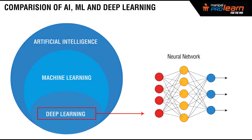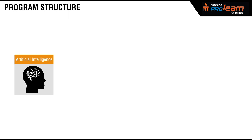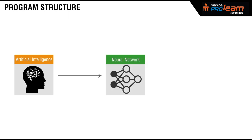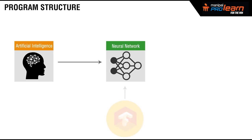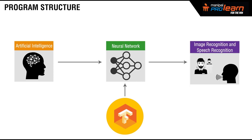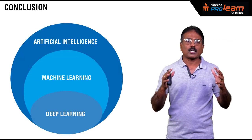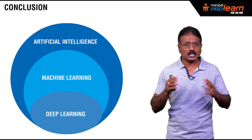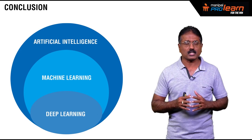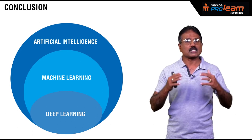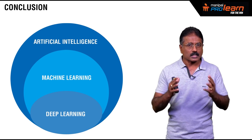Our program is structured in a similar way. We have an introduction to AI, then we will talk about what neural networks are, and then how to implement neural networks using programs and libraries like TensorFlow. Then we will go into image recognition and speech recognition, which are two of the most popular components of AI today. I hope you got a quick overview about what Artificial Intelligence is and how it is related to deep learning and machine learning. We will go into details of each of these as we move forward. Thank you very much.